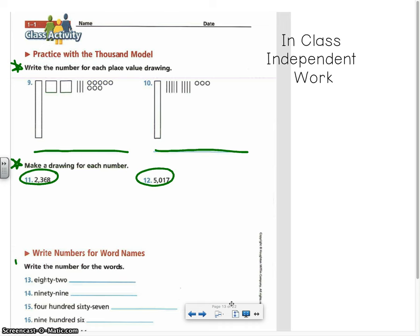Your last set of directions on this page are to write the numbers in word form. So you have numbers 13, 14, 15, and 16. The number is written in word form. You need to write it in standard form. So for 13, you have the number, the word 82. You need to write that number in standard form. I'm not going to read 14, 15, and 16 because I'd like you to try to read those word names on your own.